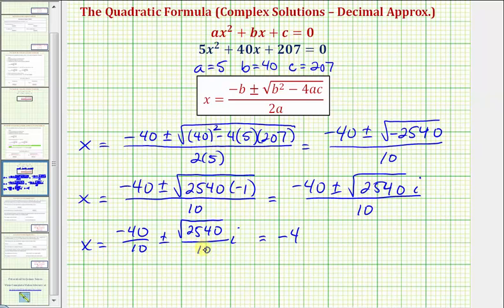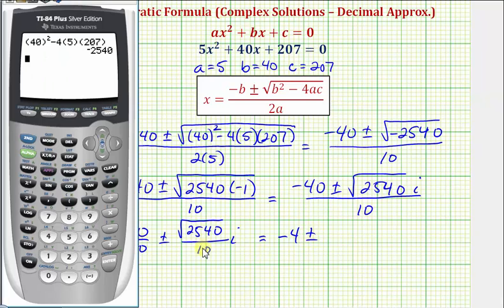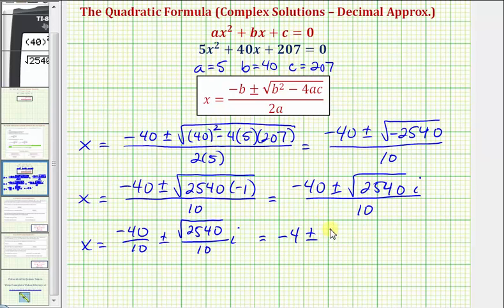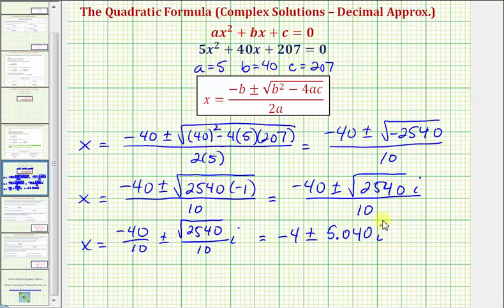Now for the imaginary number, we'll get our decimal approximation at three decimal places. So we'll have plus or minus, and now we'll find this quotient at three decimal places, so we would have the square root of 2540 divided by 10. Notice here, if we round at three decimal places, the 8 tells us to round up, so it's going to round to 5.040, and of course, times i.